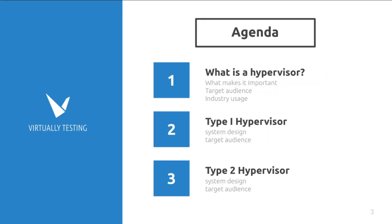Today my agenda is talking about hypervisors and the two common types, type 1 and type 2. We're going to be discussing why they are important and how they are still in popular use today. In my next two videos, I will demonstrate installing VMware's type 1 and type 2 hypervisors.